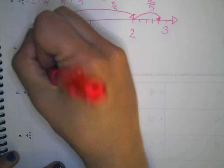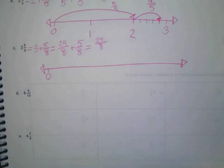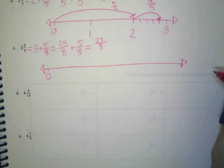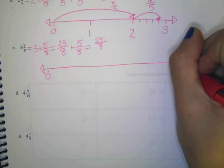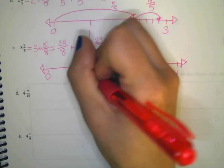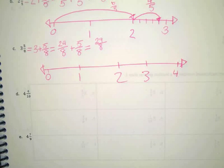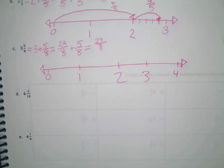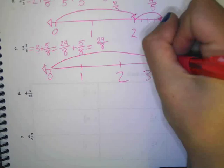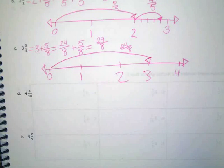Start my number line at 0, how much did I end it at? 4. Because the next whole number was 4. Because that's 3 and 5 eighths. And then I'll mark my 1, my 2, and my 3. My first jump is going to be what? To 3. And how many eighths is that? 24. 24 eighths.